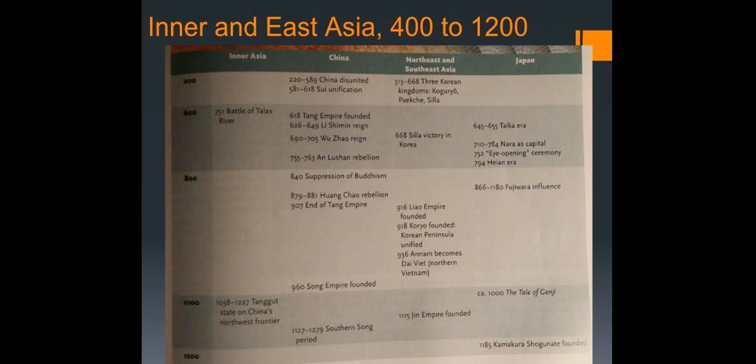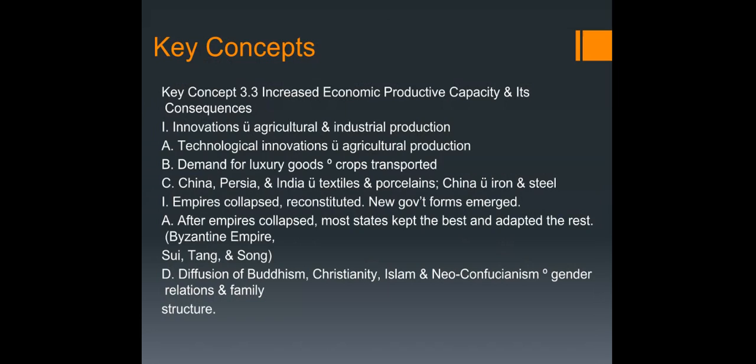Welcome everyone. This week we're focusing on inner and east Asia. We'll be talking quite a bit about three of the major dynasties in China: the Sui, the Tang, and the Song. But then we'll move on and talk about Japan, Korea, and Vietnam. Our key concepts focus on the rise of empires and new crops.